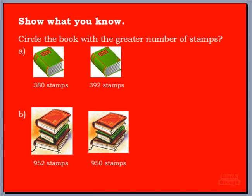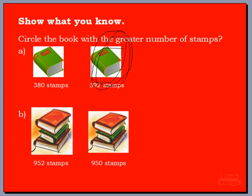Now we move on and look at our tens to help us out. One has eight tens and the other has nine tens. Boys and girls, we don't even have to look at our ones — we already have a difference in numbers. One has nine tens and the other only has eight, so the book with three hundred and ninety-two stamps is the one we circle.